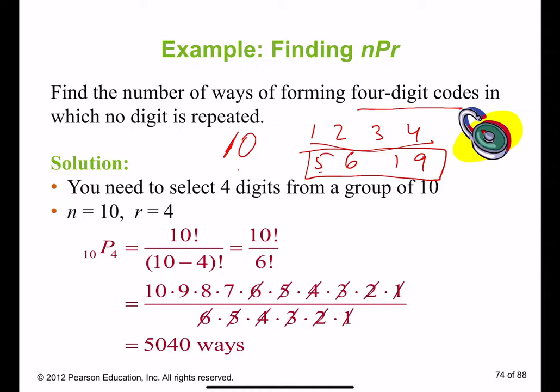Is order important for a four-digit code? Of course it is important. If I chose code 5, 6, 1, 9, if by chance I mess it up and I put 6, 5, 1, 9, then the lock will never open. Good luck with that, right? So when order is important out of selected numbers, we are going to use permutation.